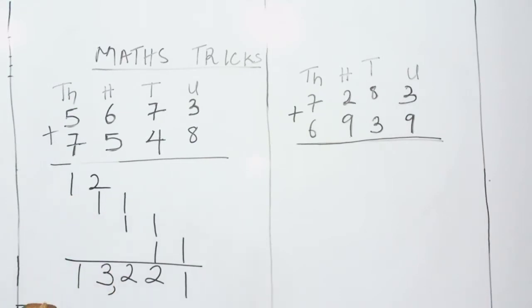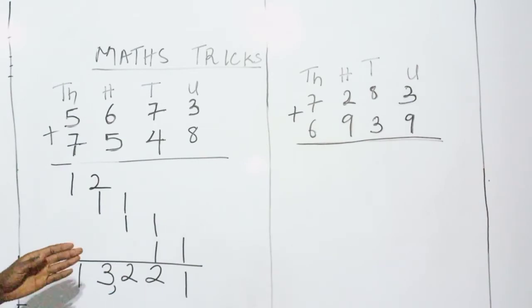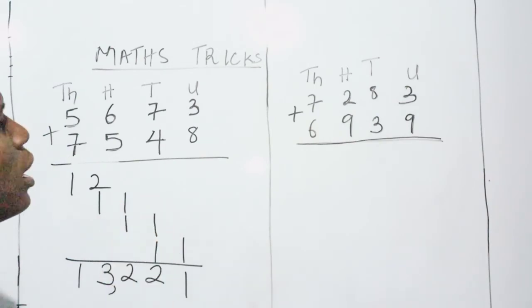So at the end, you can see that it is 13,221. So whenever we add 5,673 and 7,548, our answer must be 13,221. So let's go down to the next question.